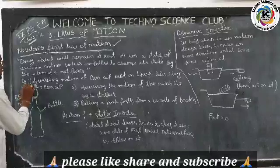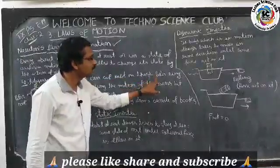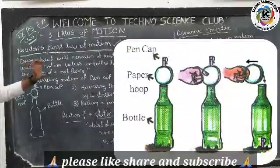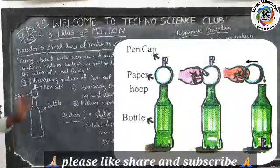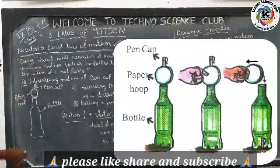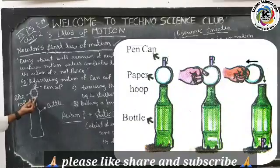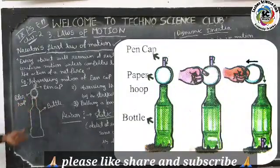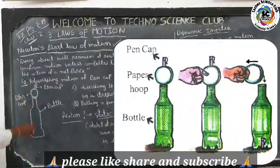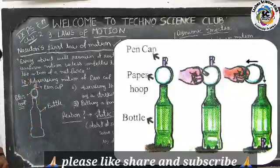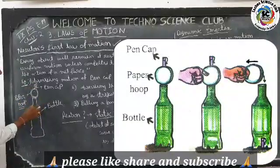The first example for Newton's first law is observing the motion of a pen cap kept on a thick paper ring. Take one bottle which has a small mouth, and take a thick paper, cut it, and form a hoop — a paper ring or paper hoop. Place the paper hoop over the mouth of the bottle so it stands out, then place a small, lightweight pen cap on top of the paper ring.